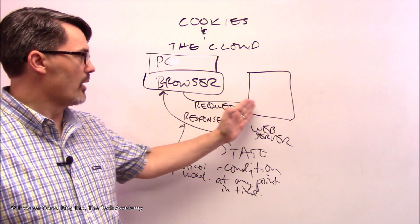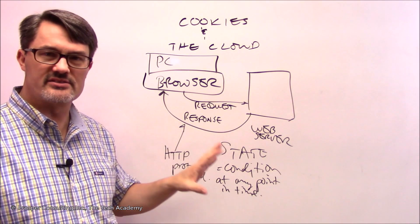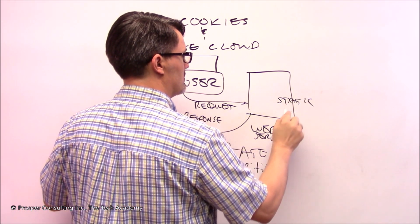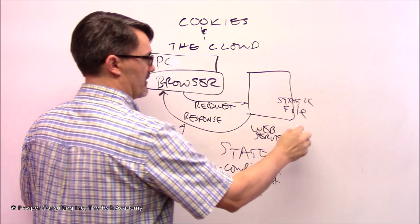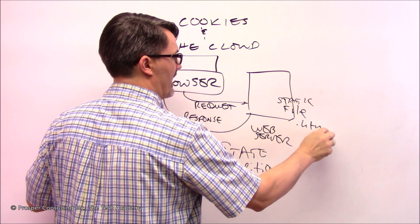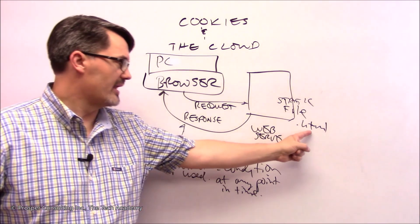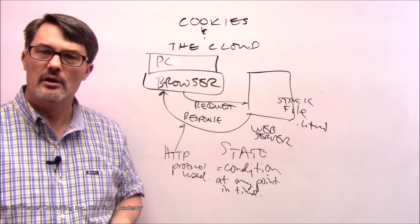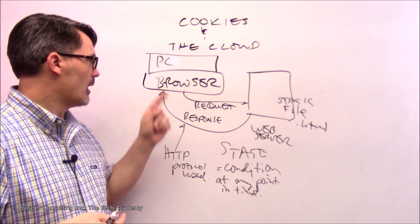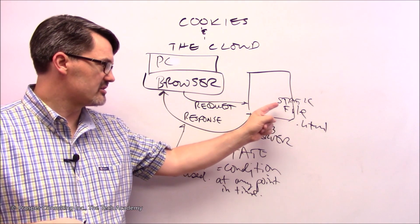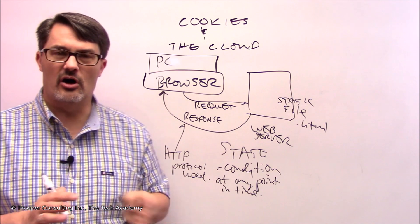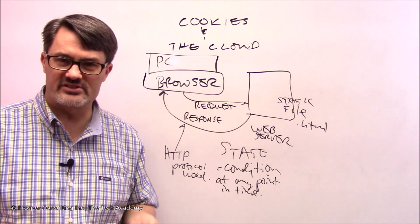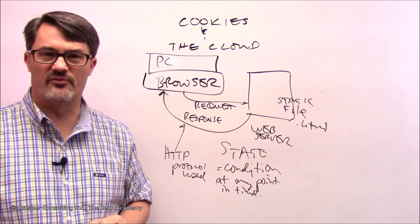When the browser requests a web page, what that web page is, in its essence, is a static HTML file. That HTML, when sent back to the browser, can be used to create the displayed web page. Each time a browser asks for that web page and it gets sent back, it happens by itself in a specific unit of time. If you request a web page and then five minutes later request that web page again, the fact that you requested it five minutes before isn't a known piece of data.